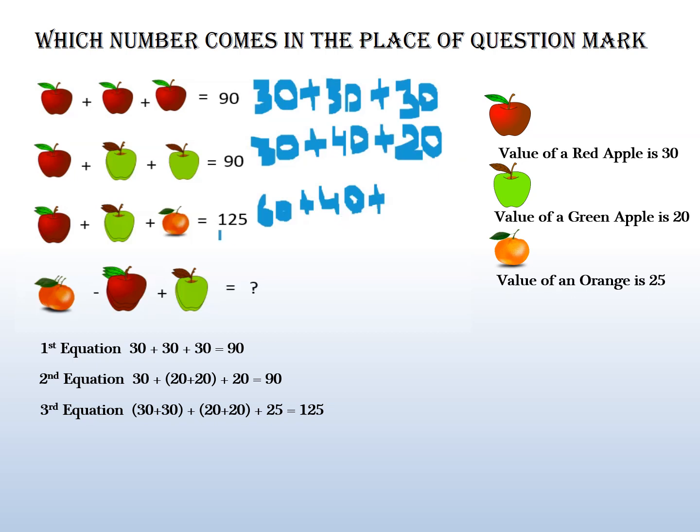So the value of orange: 125 minus 100 is 25, so the orange is 25.